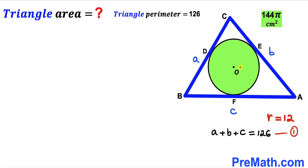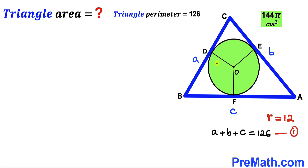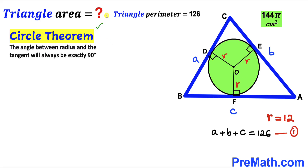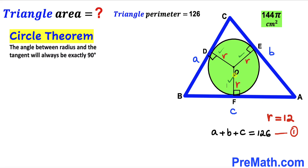Next, I'm going to connect center O with all points of tangency D, E, and F. As you can see, OD is the radius of this green shaded circle, labeled lowercase r — and likewise for OE and OF. Recalling the circle theorem: the angle between the radius and the tangent line is always exactly 90 degrees. So all three angles here are 90 degrees each, since these are our radii and these are our tangent lines.